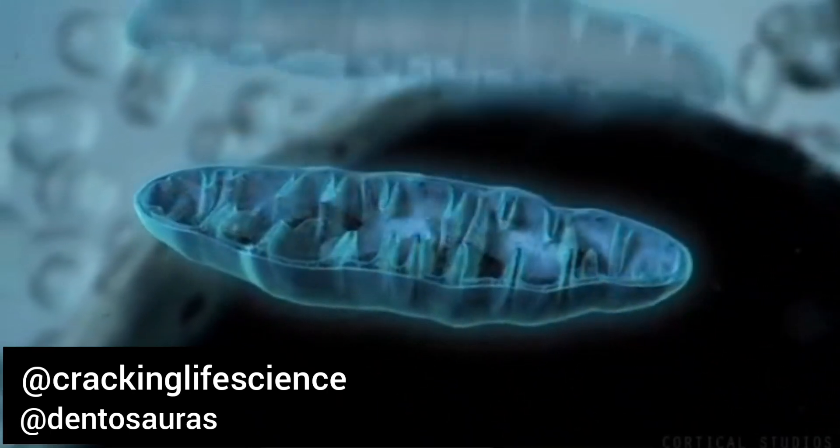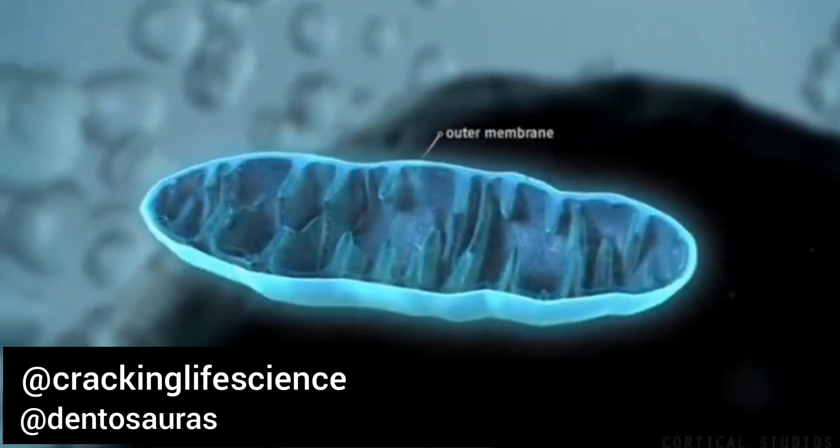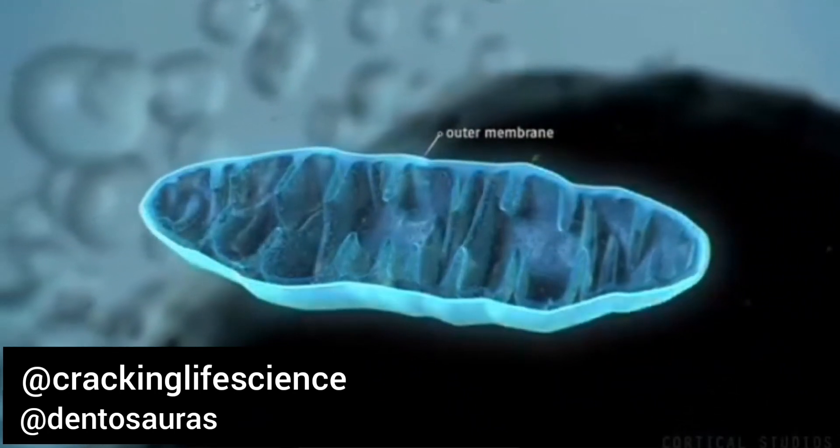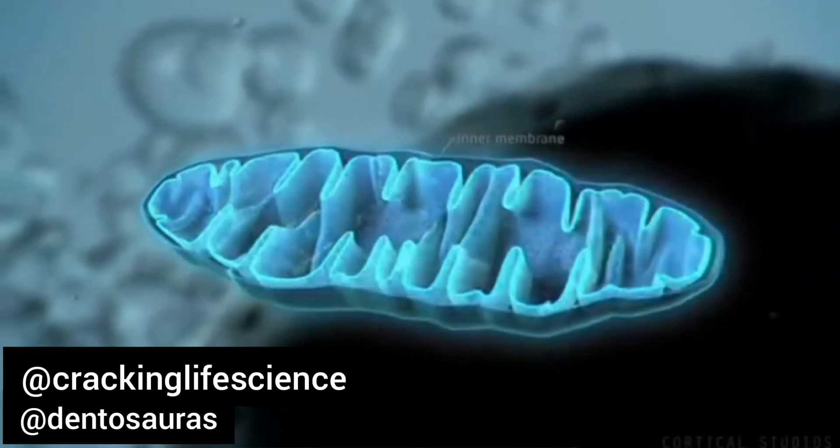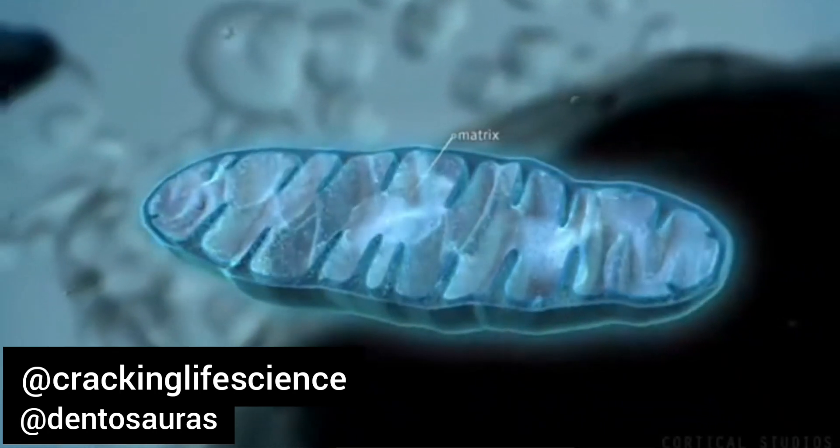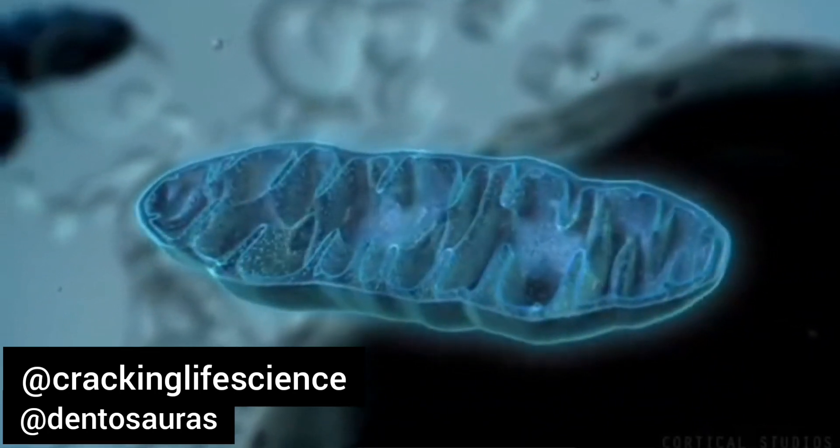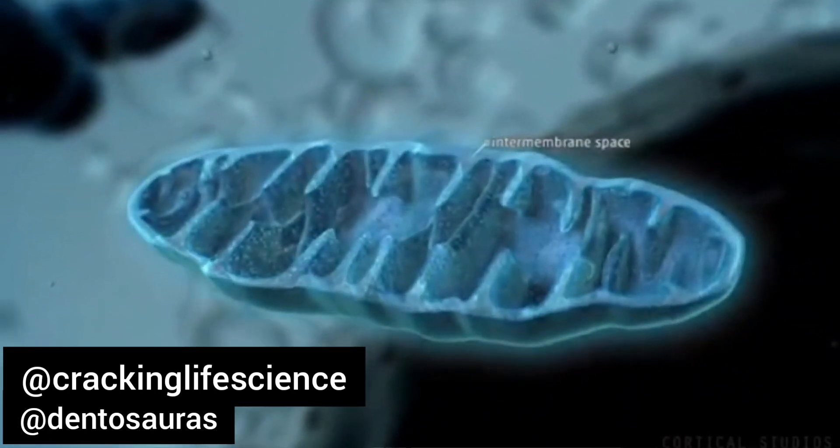Mitochondria consist of two membranes, an outer membrane separating it from the cytosol, and an inner membrane surrounding the so-called matrix. The area between these membranes is called the intermembrane space.